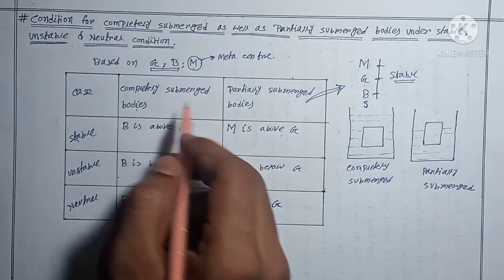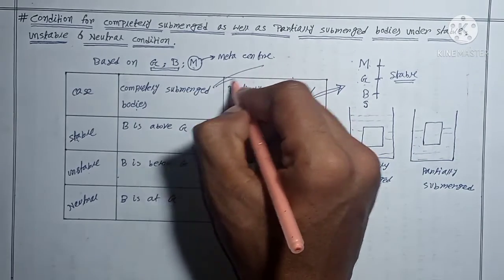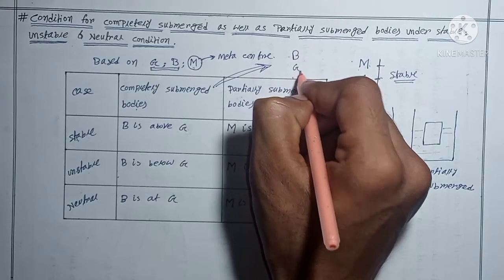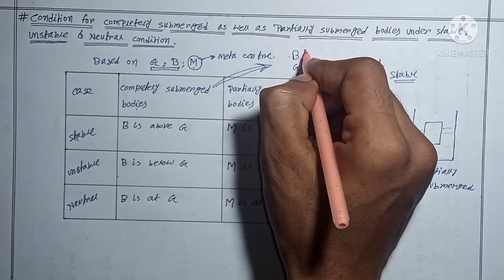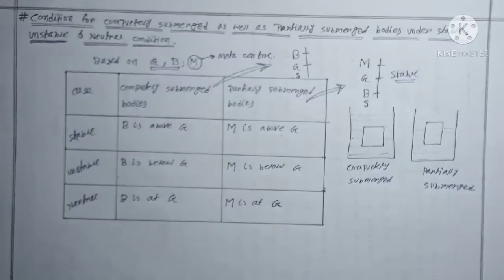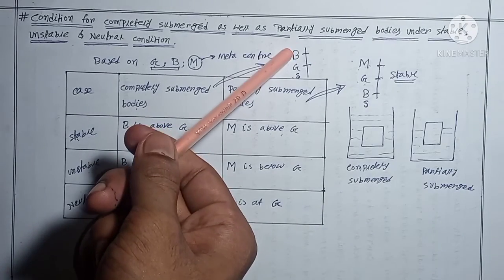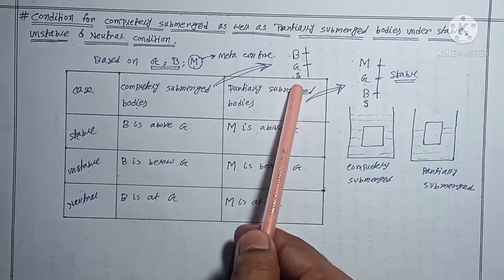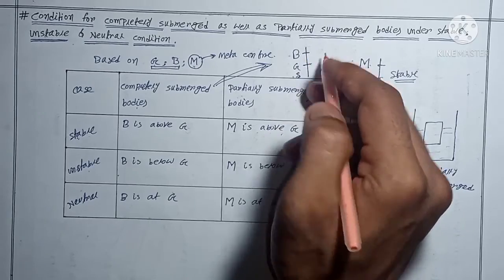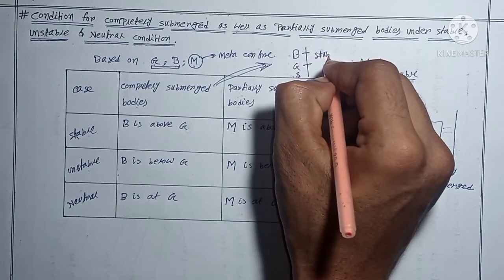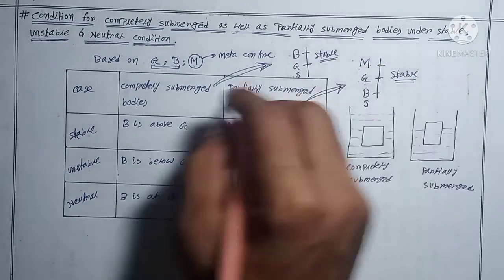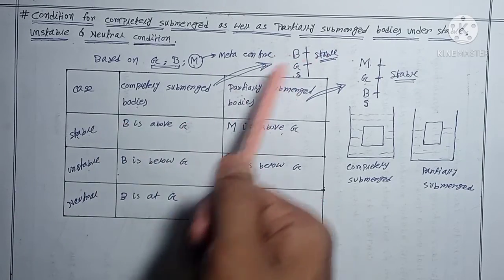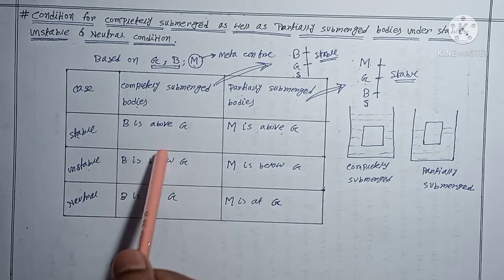Similarly, for completely submerged bodies, remember 'BGS' — B, G, S. Alphabetically, B comes before G, so B is above G. BGS is also for stable condition, meaning B is above G, which matches our condition. Unstable is just the vice versa of this.